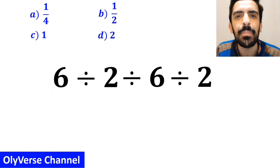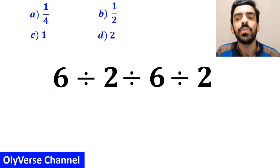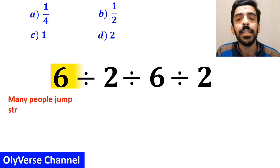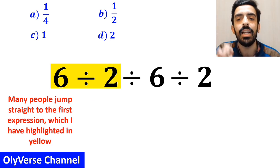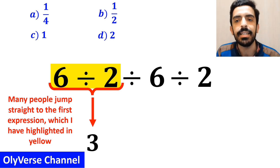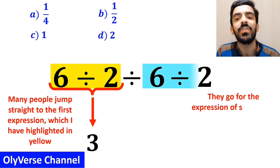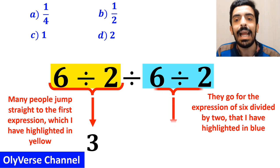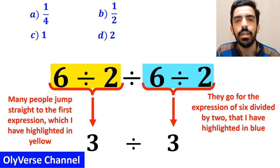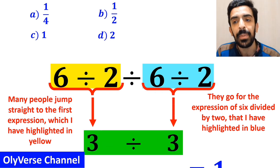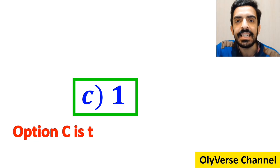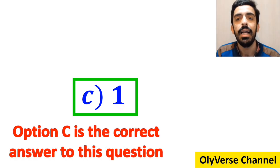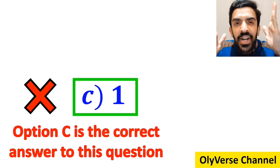Let's carefully go through the steps and solve it together. Many people jump right to the first expression, 6 divided by 2, highlighted in yellow, and replace it with 3. In the next step, they go for the other expression of 6 divided by 2, highlighted in blue, and again replace it with 3. Finally, they conclude that 3 divided by 3 is equal to 1, and quickly say that option C is the correct answer. However, that's definitely wrong.